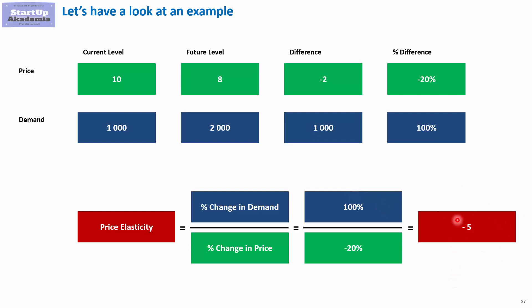Usually we will be omitting the minus sign in front of the elasticity. So when talking about elasticity, we say the elasticity is 3 or 0.5. We're going to use this convention as well — in other words, we're going to skip the minus sign in front of the price elasticity.